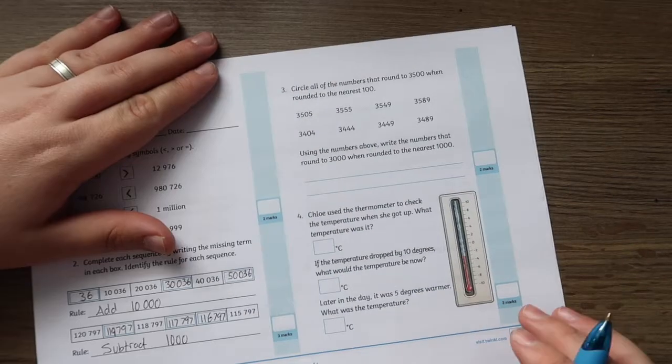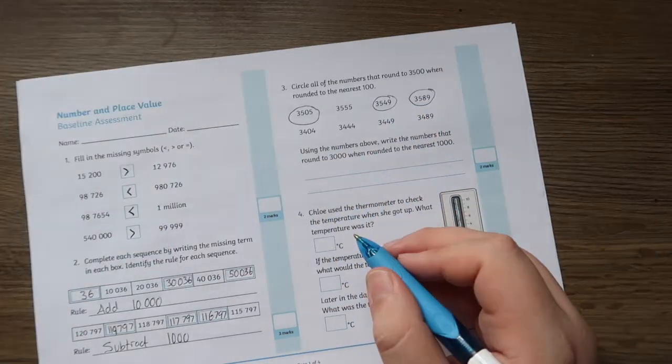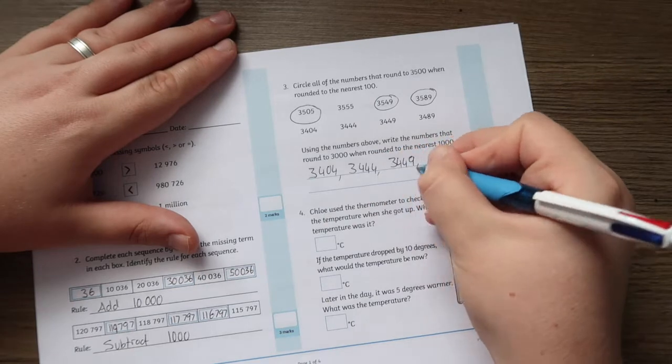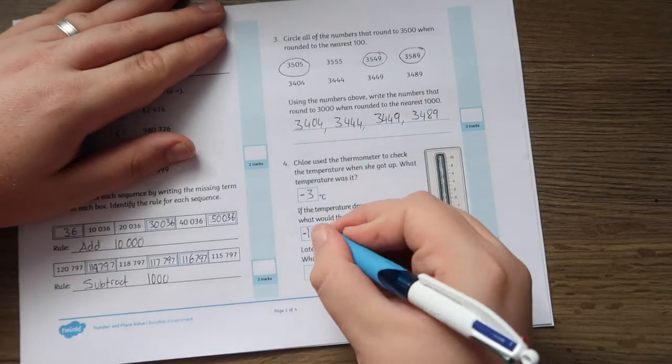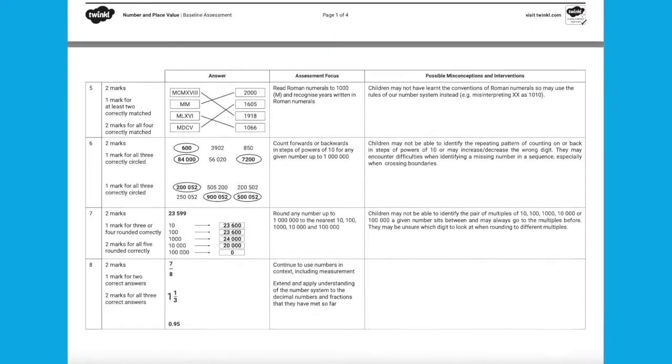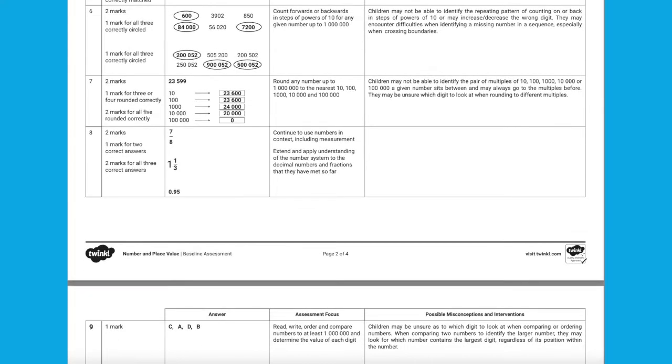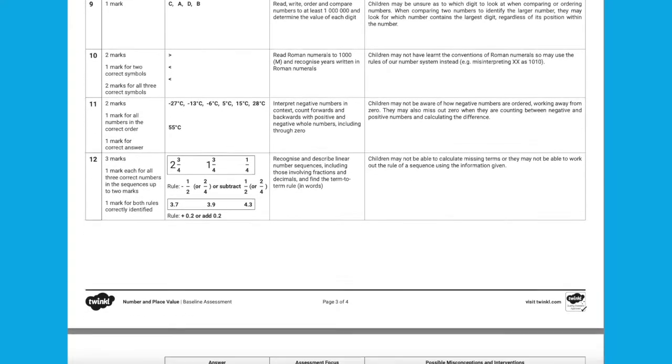This baseline assessment covers all of the year five number and place value objectives, which makes it essential in assessing children's current understanding and attainment before they begin their year six content. The useful mark scheme outlines which objectives each question addresses and identifies possible misconceptions which might underlie incorrect answers.